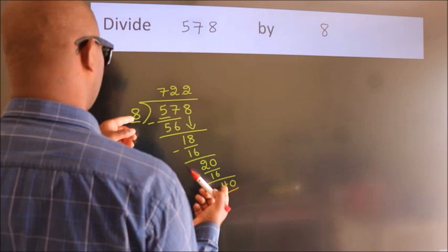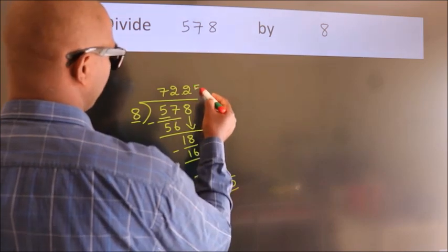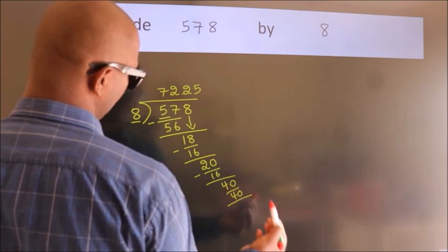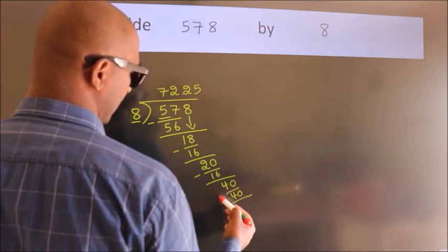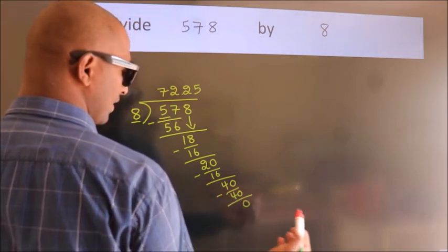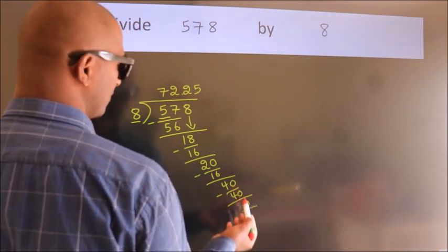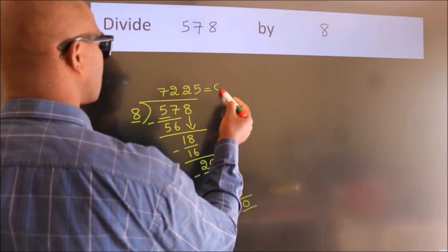In 8 table, 8 5's 40. Now we subtract. We get 0. Here we got remainder 0. So this is our quotient.